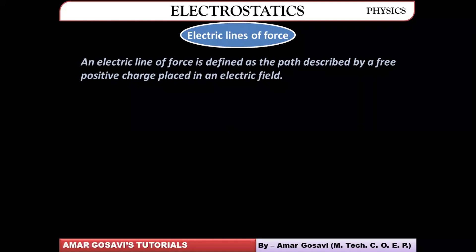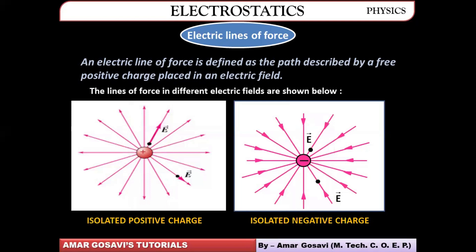An electric line of force is an imaginary path described by a free positive charge placed in the electric field. Whenever a positive test charge is placed in the electric field, it experiences a force of repulsion or attraction and starts moving — that path is called an electric line of force. For an isolated positive charge, the direction of electric lines of force is outwards; for a negative charge, it is inwards, as the test charge would be attracted.